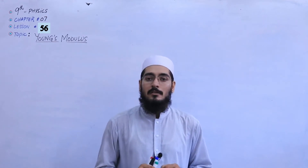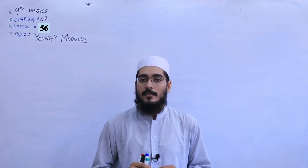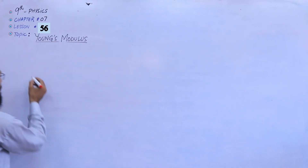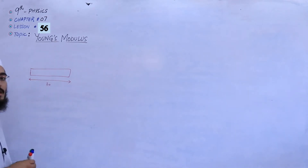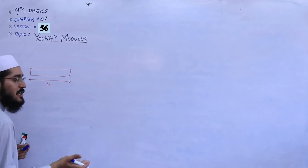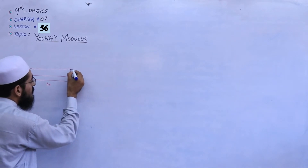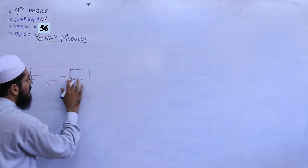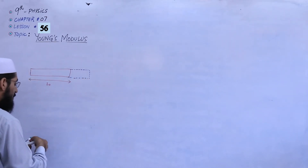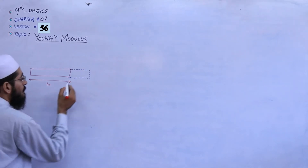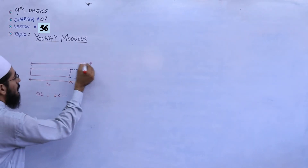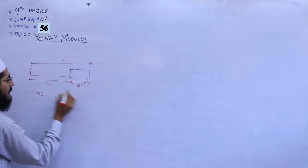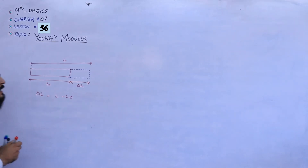So now in Young's Modulus, we have to discuss the tensile strain. For example, let me consider an object having the length L0 — this is the original length of an object. When we apply a force, or by any change, if the length of an object increases by delta L, the whole length becomes L, and delta L means L minus L0.